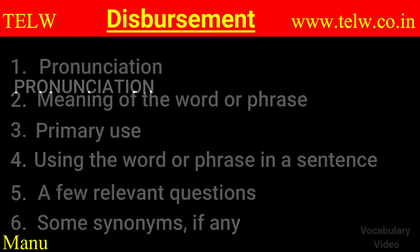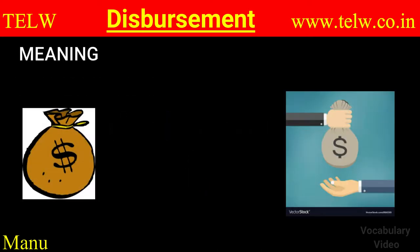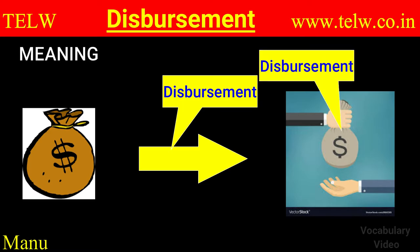Let's start. How do you pronounce the word? It's disbursement — stress on the second syllable. Disbursement. What does it mean? It's a process of giving out money or funds from some account. It's also the money so paid out.